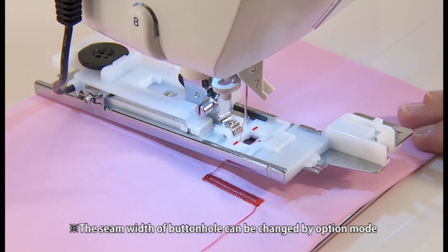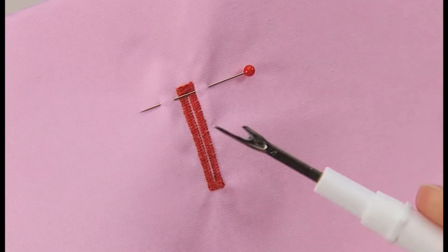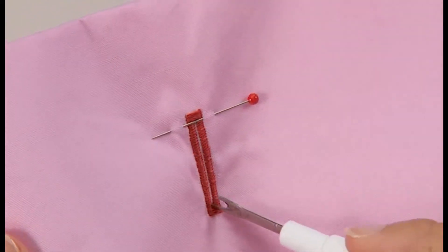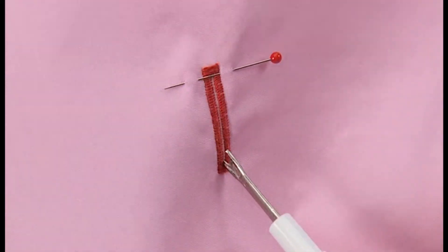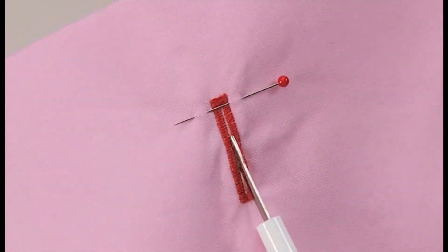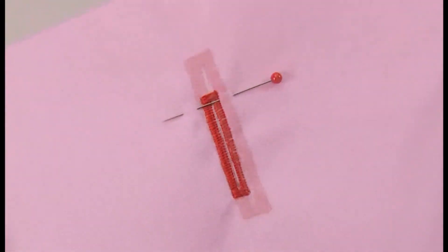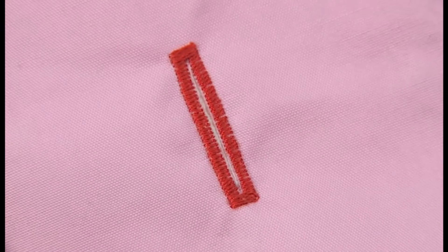Unplug the sensor pin after sewing. Open the buttonhole using a ripper. Pierce a stopper pin at the bar tack and open the buttonhole with a ripper. Be careful not to cut the stitches.